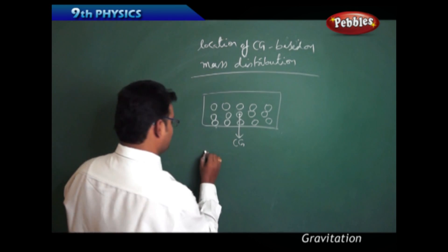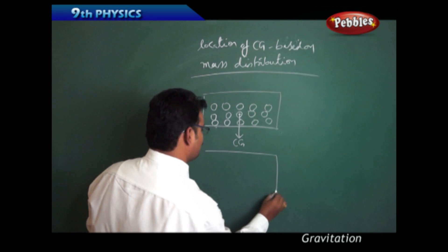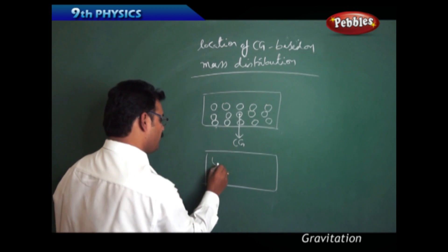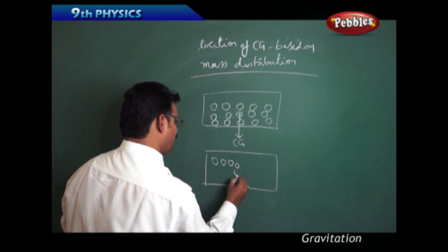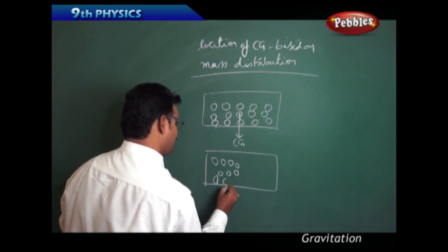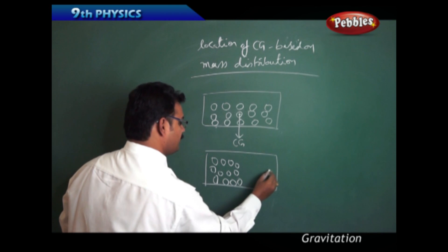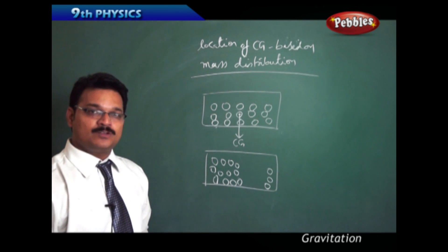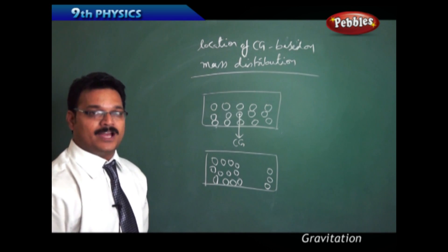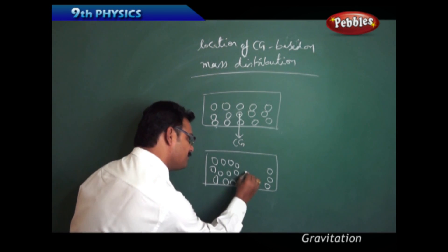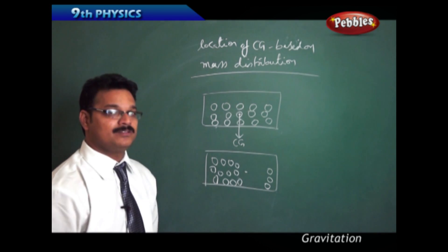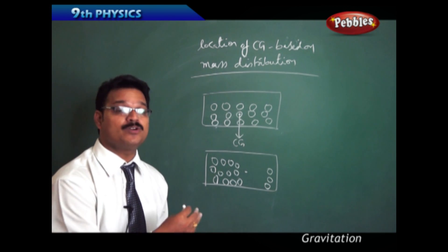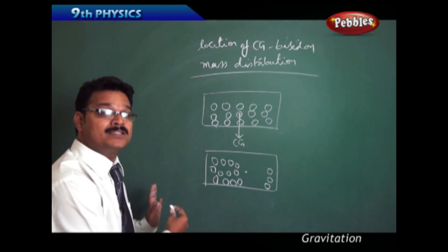Now see the next stage — the same box, the same size, but this time the 15 marbles are unevenly distributed. If you ask where is the centre of gravity and say it is exactly the centre of the box, that is wrong.